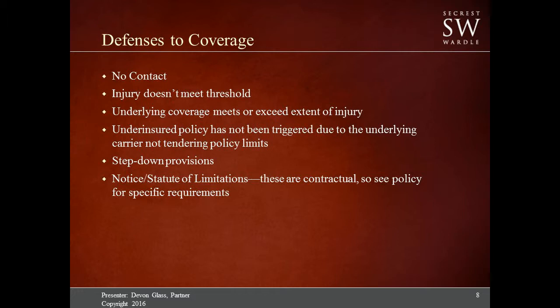There also may be a step-down provision. If the individual determined to be at fault is a family member — say the wife is at fault and the husband is injured — and there is an underinsured claim being processed because the wife is insured with a different carrier than the husband, then the underinsured limits may step down to the statutory minimum requirements. So even if they have a $500,000 underinsured policy available, if it's against a family member or some other specified category of individual, it may cause that limit to be reduced to the statutory minimum.